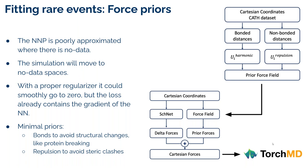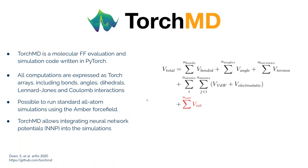We do all of this using TorchMD, our software to perform simulations using neural network potentials. TorchMD is an MD engine fully written in PyTorch, making it fully differentiable. All computations are expressed as Torch arrays including bonds, angles, dihedrals, and all types of interactions. Because it's written in PyTorch, it is very easy to add external forces — mainly neural network potentials — and because those neural network potentials are done in PyTorch, it's very easy to integrate and simulate these learned potentials.